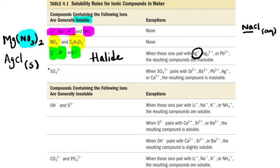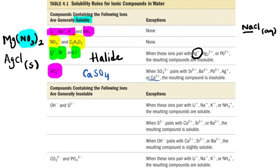For SO4²⁻, sulfates — sulfates are soluble except when paired with certain ions. For example, calcium sulfate: sulfates are soluble except when sulfate pairs with calcium, so the resulting compound is insoluble — we write (s).